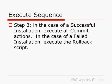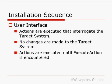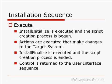Here are the final tasks. After the execute sequence has finished, control returns back to the user interface sequence. All actions that occur after execute action in the user interface sequence will then be performed. Let's go over this again. In the user interface sequence, actions are executed that interrogate the target system — no changes are made. Actions are executed until execute action is encountered. In the execute sequence, install initialize is executed and the script creation process is begun. Actions are executed that make changes to the target system. Install finalize is executed and the script process is ended. Control is then returned to the user interface sequence.